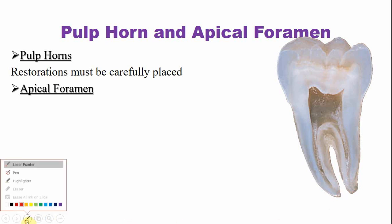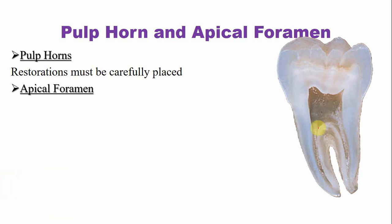Sometimes there are accessory foramina, usually in the furcation areas or in the apical third portion. In this portion sometimes there are some accessory foramina.